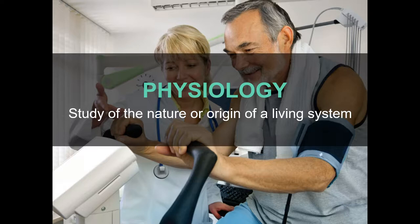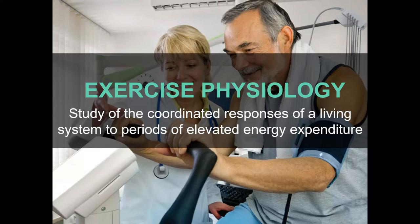Why? What is not within homeostasis when you exercise — that requires blood to flow differently, that requires your heart rate to increase, that requires you to generate heat? What is it about exercise that is outside of homeostasis, that's different from rest? Energy requirement — yes, sustained elevated energy requirement. Exercise physiology could be the study of the coordinated responses of a living system, or systems all of them together, to periods of elevated energy expenditure.